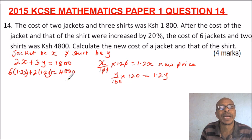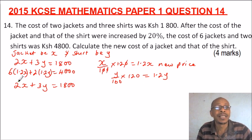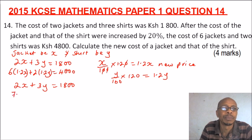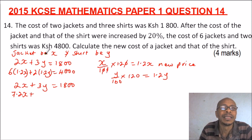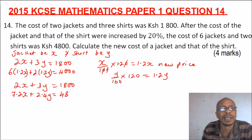Let's open the brackets and rewrite the equations. The first equation remains 2x + 3y = 1,800. Expanding the second: 6 multiplied by 1.2 gives 7.2, so we get 7.2x. Then 2 multiplied by 1.2 gives 2.4, so we have 7.2x + 2.4y = 4,800.